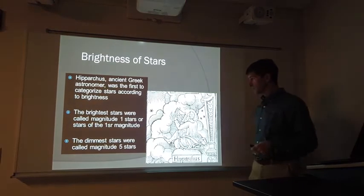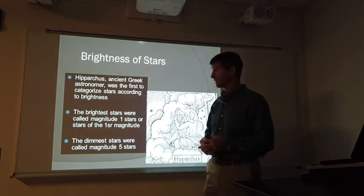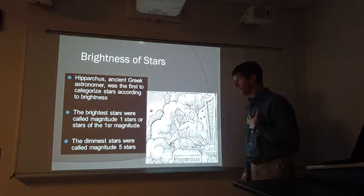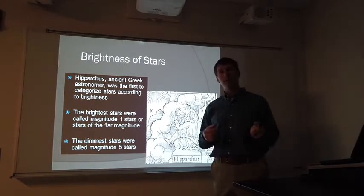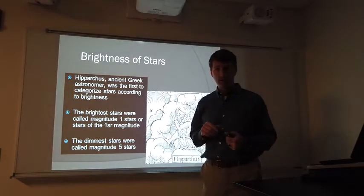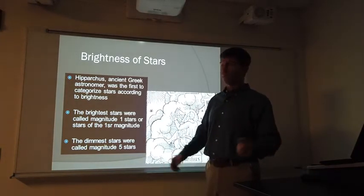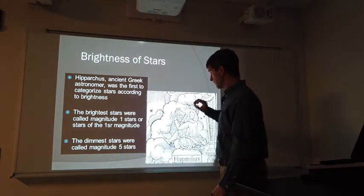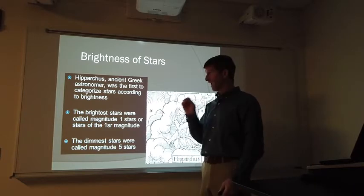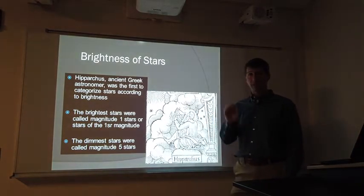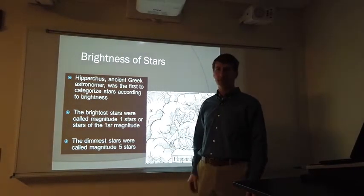Okay, brightness of stars. Back in the time of the ancient Greeks, Hipparchus was the first to try to categorize stars and catalog stars according to their brightness. He placed them on a scale. One being the brightest stars, two being the second brightest set of stars, three, four, and five, finally being the dimmest stars. Now, unfortunately, Hipparchus did not have the equipment that we have today where we can actually physically monitor how bright these stars are. So, his magnitude scale was more of a subjective scale.